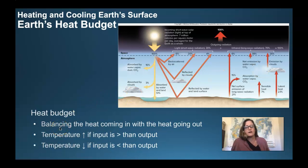The Earth's temperature is going to increase if the input coming in is greater than the output, and if the temperature is going down, that's because the input is less than the output.